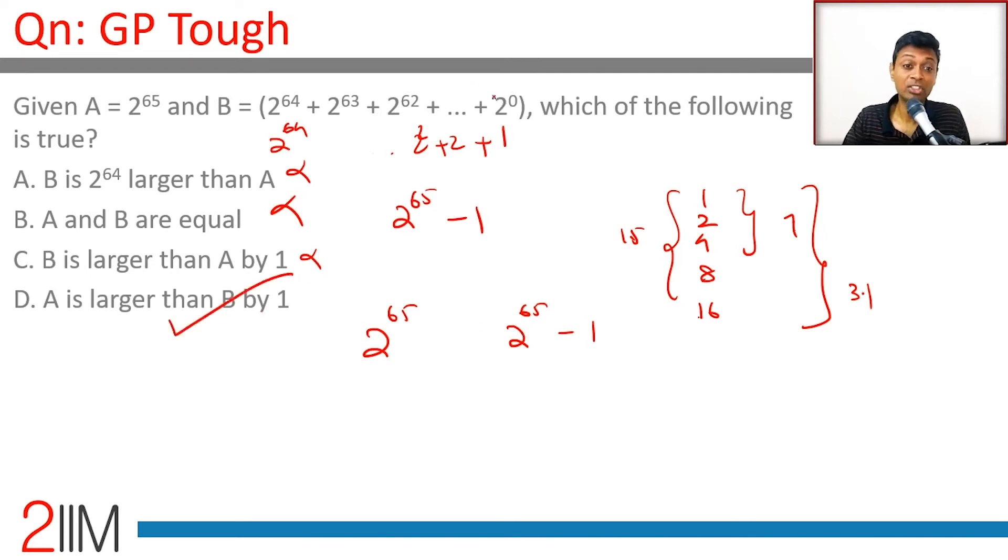Looks like you are adding 64 terms here, but they don't quite add up to this. That's the beauty of exponents. Exponents make the numbers leap and jump, and so 2 power 65, a single term, is way more than these 64 terms added, 65 terms added together.